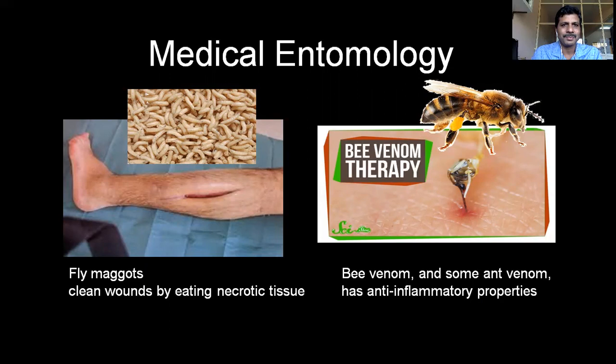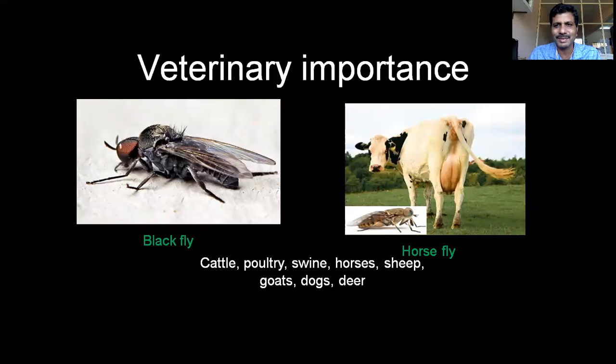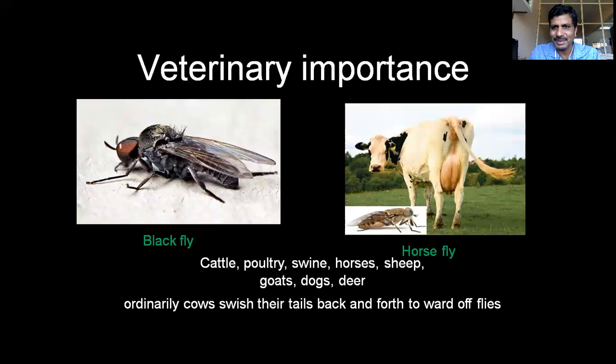In veterinary entomology, insects are also associated with domestic animals. Black flies, horse flies, and others cause infections, acting as endoparasites or ectoparasites. You may have seen domestic animals frequently moving their tails to ward off these flies — they cause significant nuisance. There is therefore a necessity of studying insects in veterinary research as well.